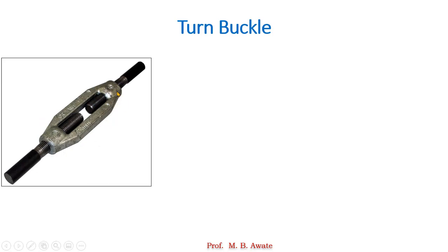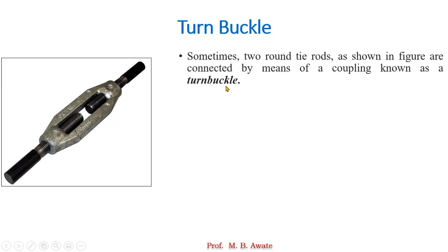What is a turnbuckle? In this figure you can see there is a turnbuckle. Sometimes two round tie rods which are shown in the figure are connected by means of a coupling known as a turnbuckle. In this figure you can see there are two tie rods and these two tie rods are connected by means of a coupling which is at the center, called as a turnbuckle.